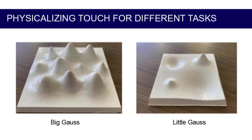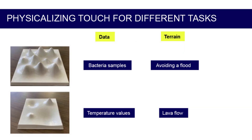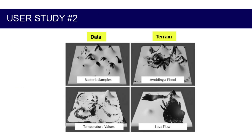We used two objects in this study: Big Gauss and Little Gauss. Both objects are made of Gaussian functions, are intended to be ambiguous, and open to a variety of interpretations. Each participant interacted with each model in two different ways. In one case, the model was described as a data representation — physicalizing either biology data for Big Gauss or weather data for Little Gauss. In the other case, the model was described as a landscape, and participants were asked to either chart a path through the terrain for Big Gauss or predict where the lava would flow for Little Gauss. Eight participants completed this study. Touch traces were captured by photographing the model under UV light and then mapped to digital models.